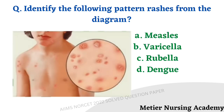Identify the following pattern of rashes from the diagram. Options: measles, varicella, rubella, dengue. Looking at the image, all stages of rashes appear simultaneously in the same area — this is called pleomorphism. Pleomorphism is a characteristic feature of chickenpox, which is caused by Varicella Zoster. So the right answer is option B, Varicella Zoster.